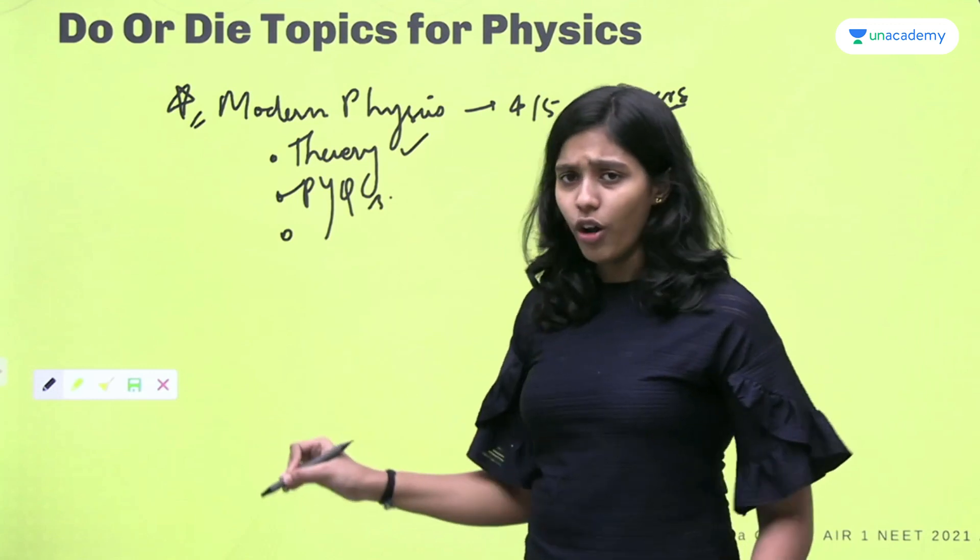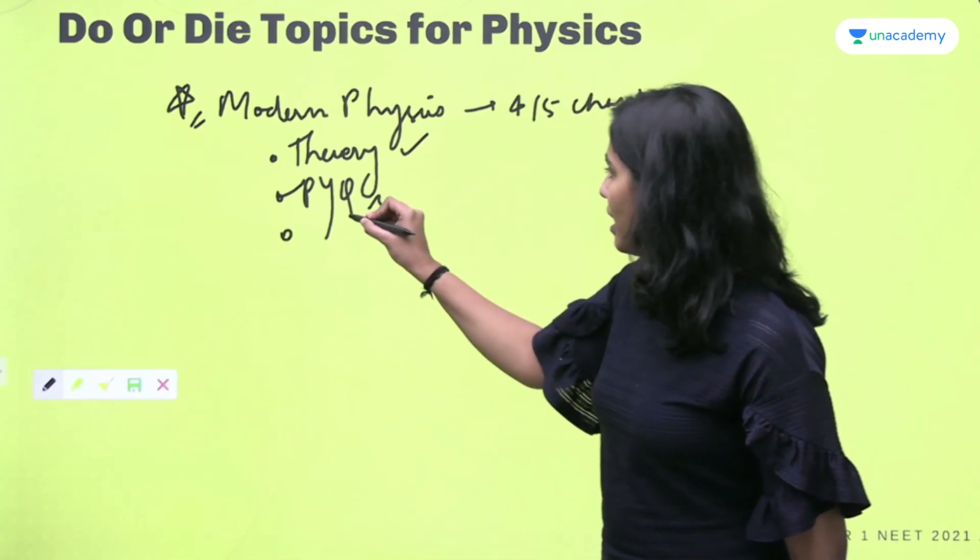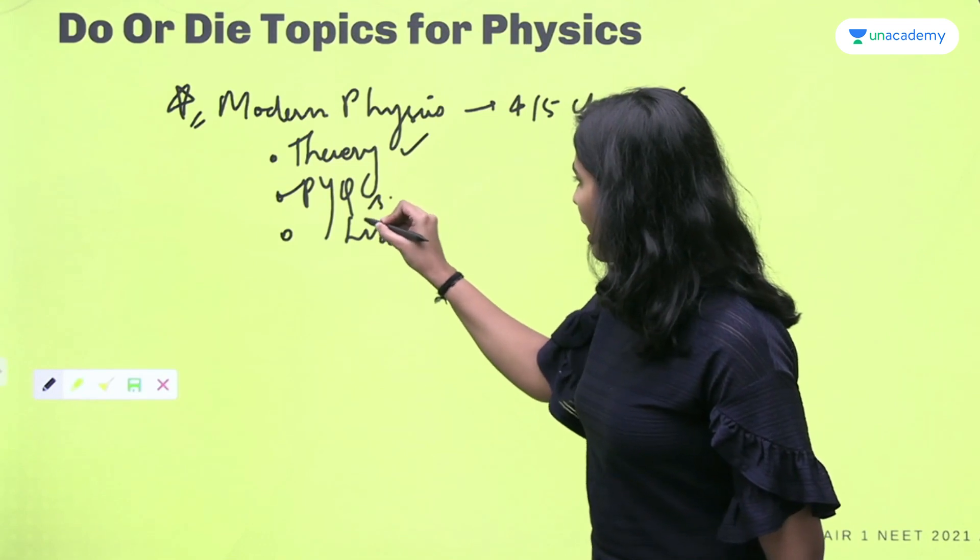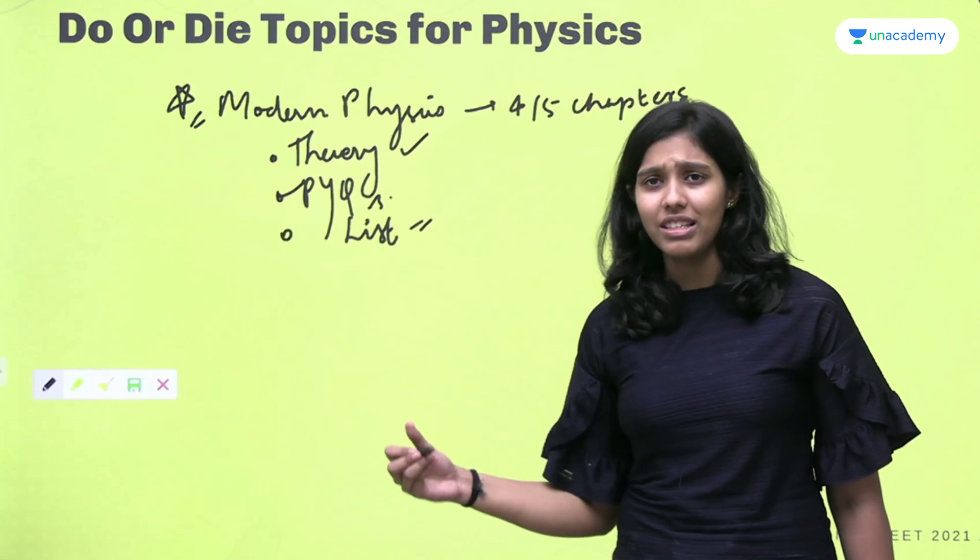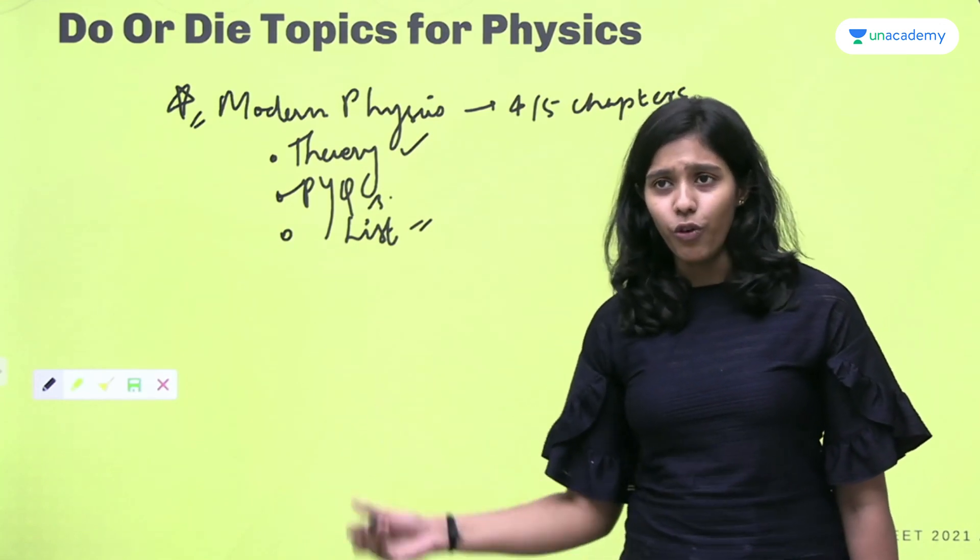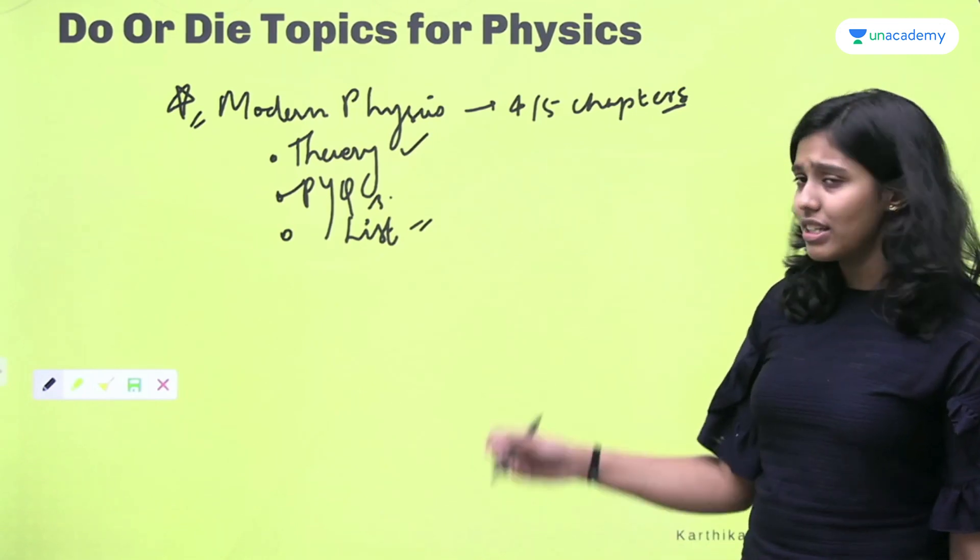And thirdly, there are a lot of formulae in modern physics, a lot of them. So I would suggest make a list of formulae and under no circumstance should you be forgetting any formulae because modern physics is guaranteed marks. Just four or five chapters that can be done very easily and guaranteed score, believe me.